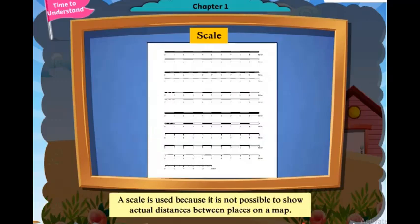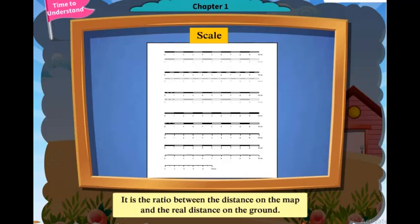The scale is used because it is not possible to show actual distances between places on a map. It is the ratio between the distance on the map and the real distance on the ground.